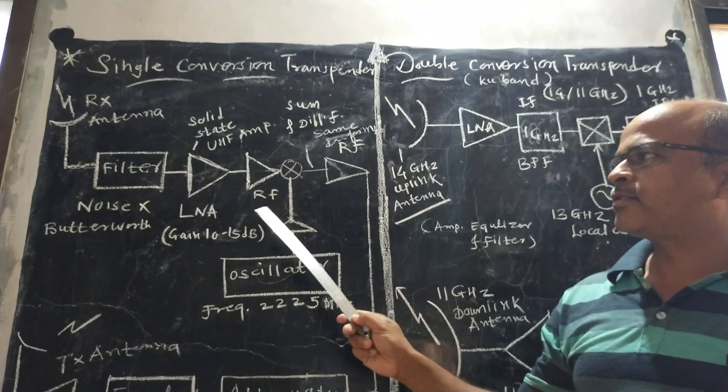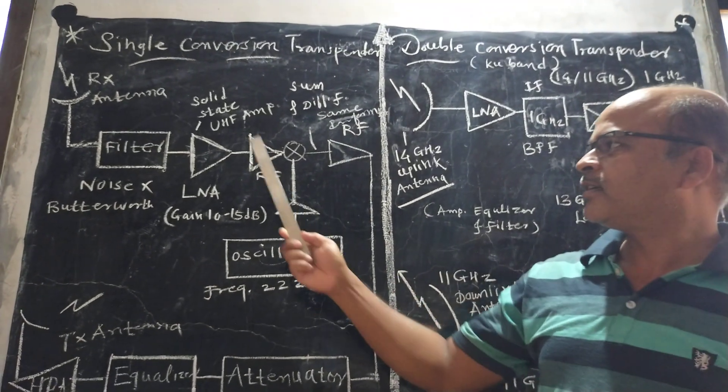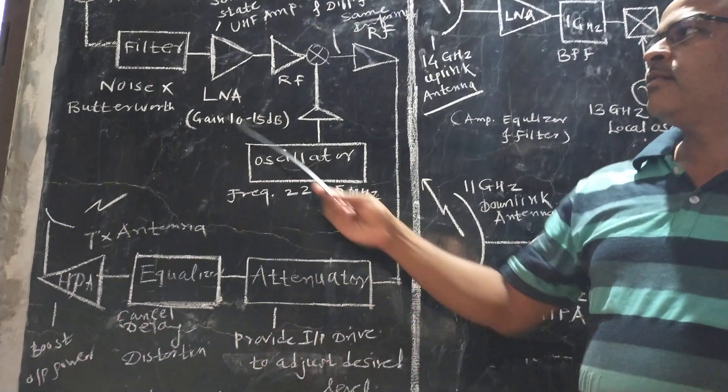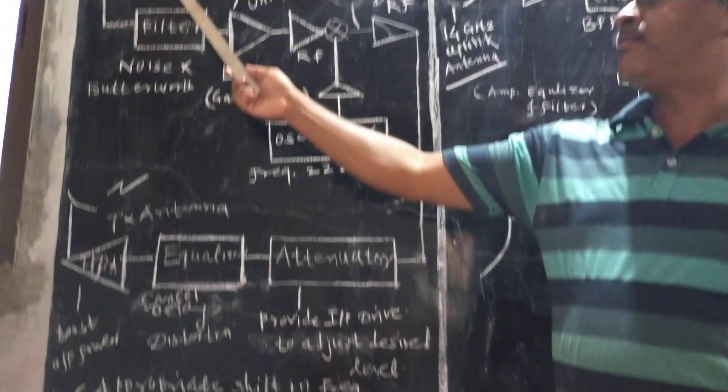First is the single conversion transponder. This is a detailed block diagram of a single conversion transponder.